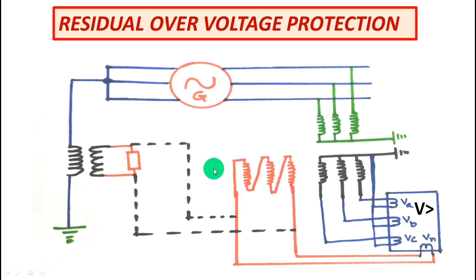That this PT winding rating should be 110 by 3, not the 110 by root 3. Suppose if this is an 11 KV generator. So you will using this PT, this phase voltage will be 11 by root 3 by 110 by root 3. But here this winding winding rating will be 110 by 3.